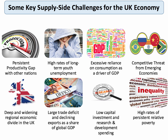The UK economy has many supply-side challenges: a productivity gap between nations, very high rates of youth unemployment, over-reliance on consumers instead of investment as a source of growth, competitive threats from Eastern Europe and emerging nations, a deep regional divide, a large trade deficit, insufficient capital investment, and very high rates of relative poverty. This suggests the British economy has a whole series of structural supply-side issues it has to address — that is what supply-side policy is all about.